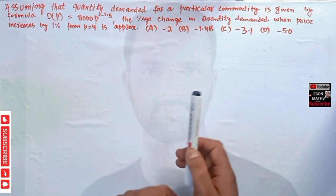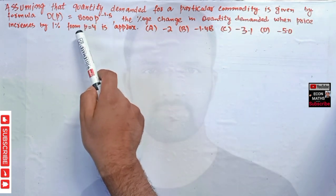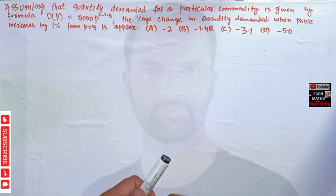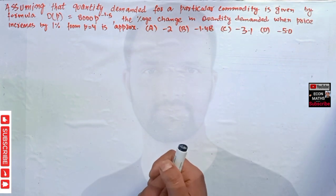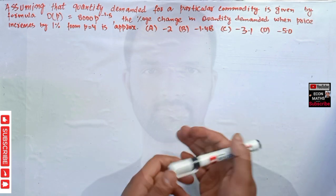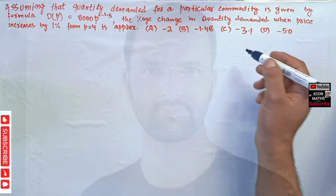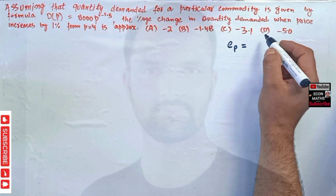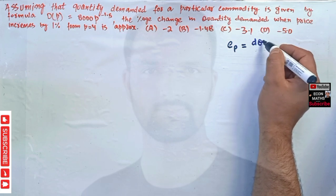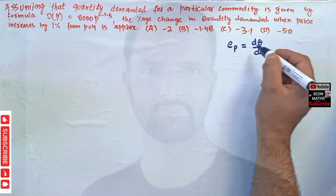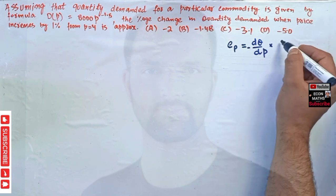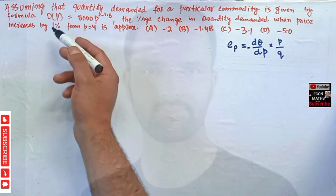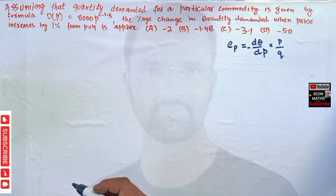We have to see what will happen to quantity demanded when the original price changes by one percent, if the original price was p = 4. When it changes by one percent, what would happen to the percentage change in quantity demanded? First, we write the price elasticity of demand formula. Price elasticity of demand is given by E_p = (dQ/dP) * (P/Q), with a negative sign.